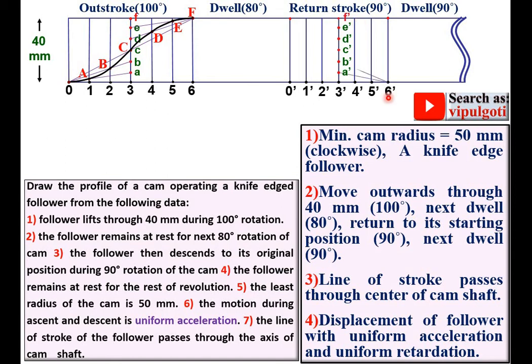Now join 6 dash to A dash with the straight line, then 6 dash to B dash and then 6 dash to C dash. And remaining work you can understand.